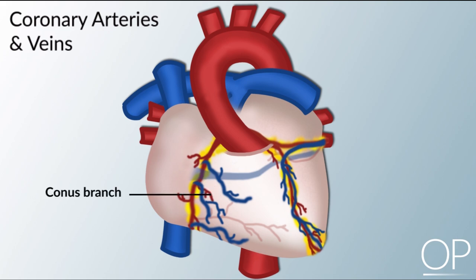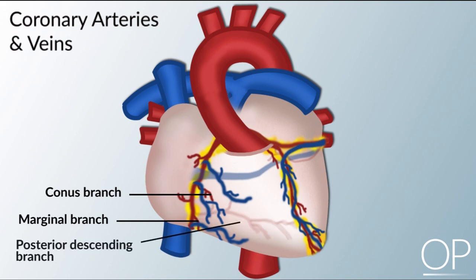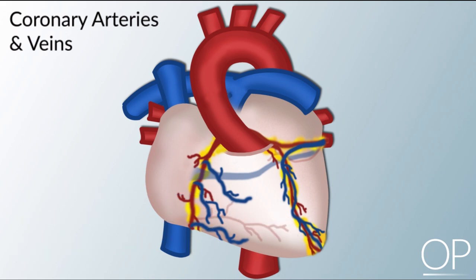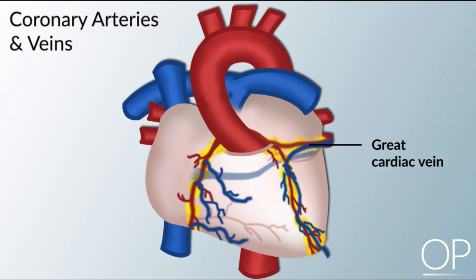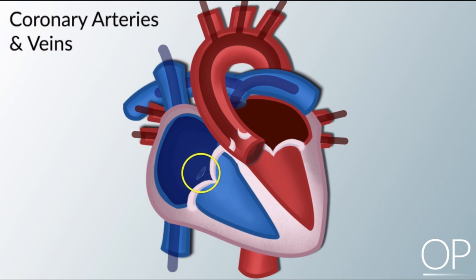The right coronary artery's three major branches are the conus, the right marginal branch, and the posterior descending branch. After flowing through an extensive network of capillaries, blood from the coronary arteries drains into the cardiac veins, which follow into the great cardiac vein and coronary sinus. Blood empties from the coronary sinus into the right atrium.